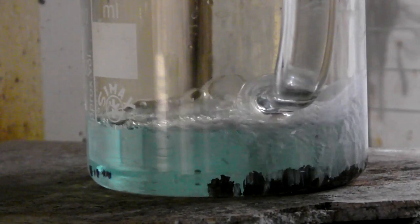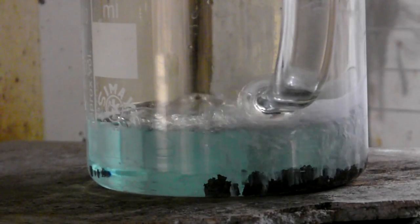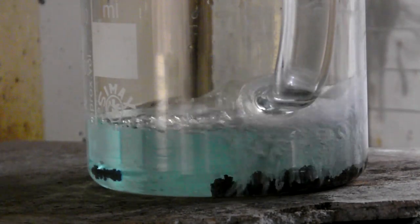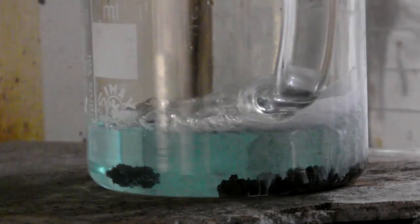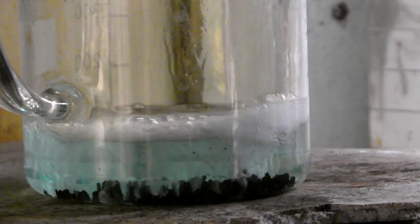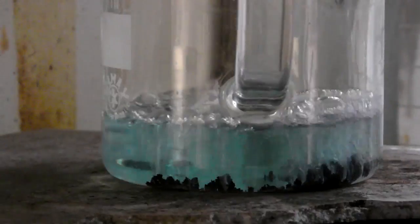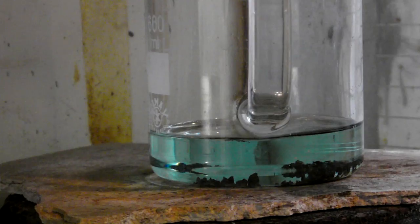When there are no more brown fumes evolving, the silver nitrate is decanted and a fresh portion of acid is added. When the fresh acid produces no reaction, the silver nitrate is decanted.